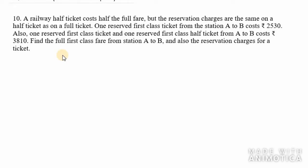One reserved first class ticket from station A to B costs $2,530. Also, one reserved first class ticket and one reserved first class half ticket from A to B costs $3,810.